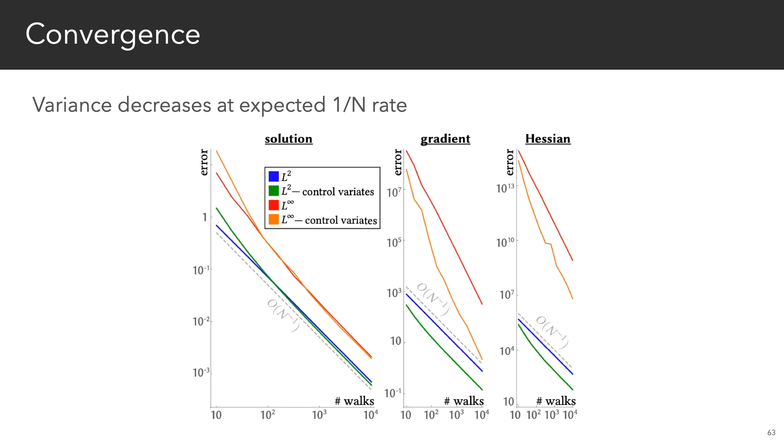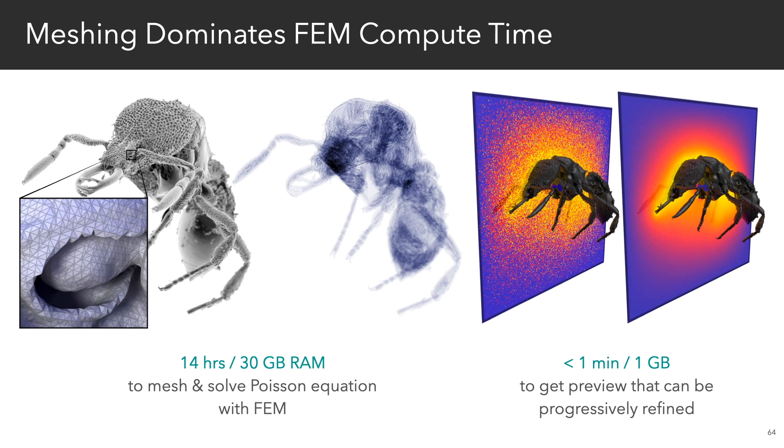In terms of convergence, our estimators are guaranteed to converge to the true smooth solution because they're unbiased. So here we plot the error, showing that we get the expected rate of convergence. For problems with complex geometry, meshing actually tends to dominate FEM compute time. But with Monte Carlo, we get immediate feedback that can be progressively refined.